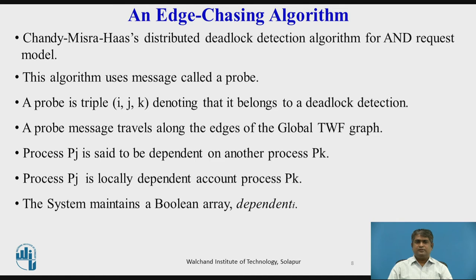A process PJ is said to be dependent on another process PK if there exists a sequence of processes PJ, PI1, PI2 up to PIM, such that every process except PK in the sequence is blocked, and each process except the first (PJ) holds a resource for which the previous process in the sequence is waiting. Process PJ is locally dependent on process PK if PJ is dependent upon PK and both processes are at the same site.